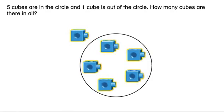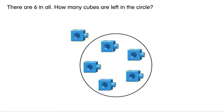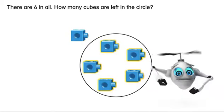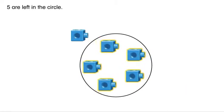How many cubes are there in all? There are six in all. How many cubes are left in the circle? Five are left in the circle.